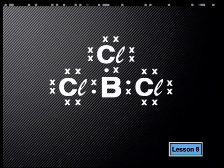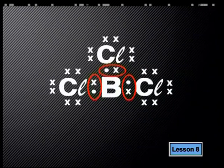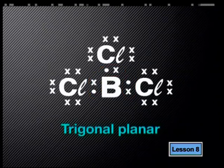Let's apply this idea to a particular molecule. One molecule that has three bond pairs is boron chloride. A good place to start when determining the shape of any molecule is to draw the Lewis diagram. In BCl3, boron forms three single bonds with each of the chlorine atoms. These three bond pairs need to be arranged as far away from each other as possible, so the boron chloride molecule has a trigonal planar shape.